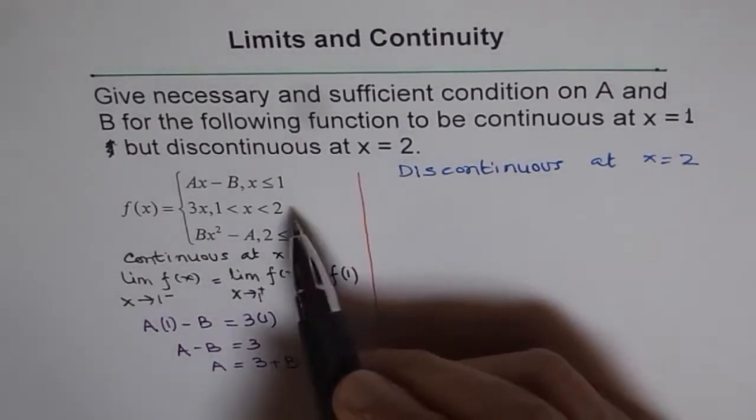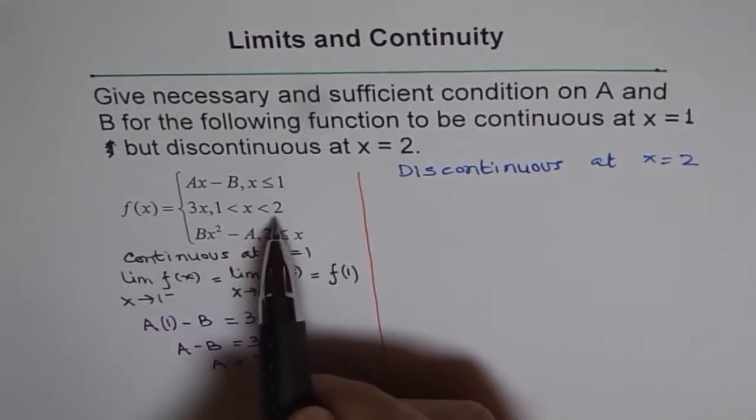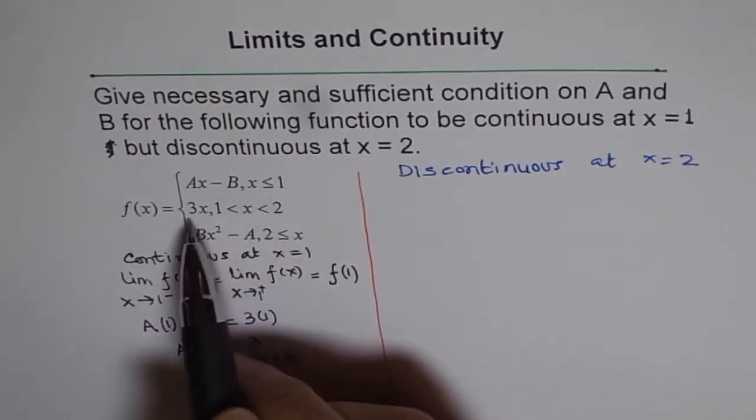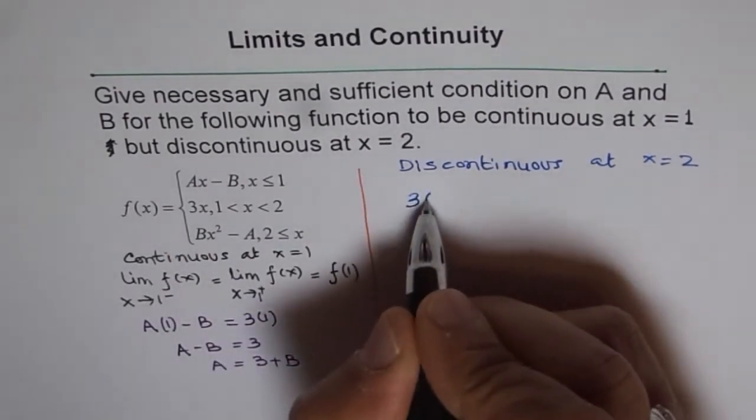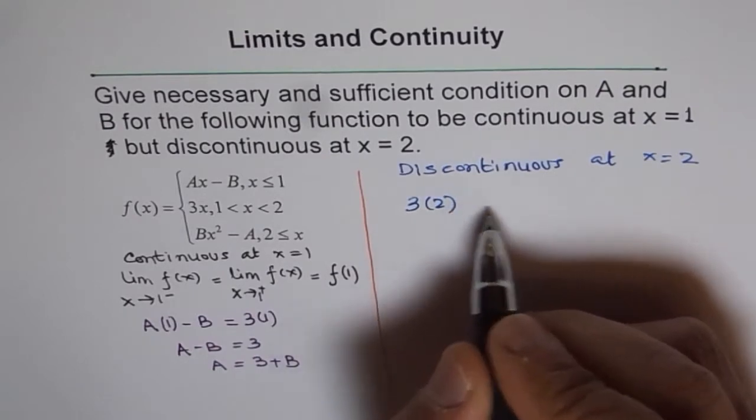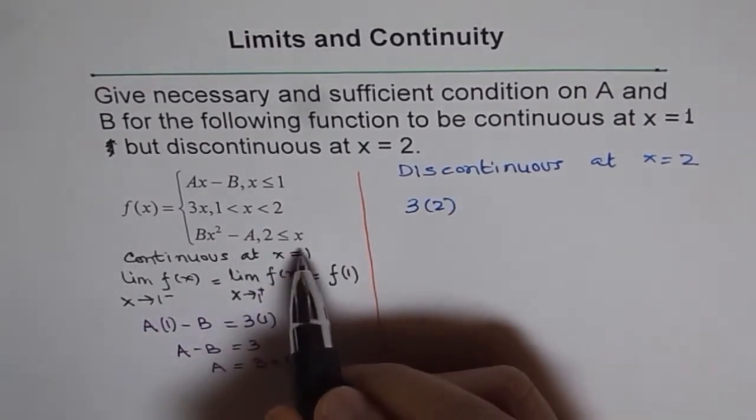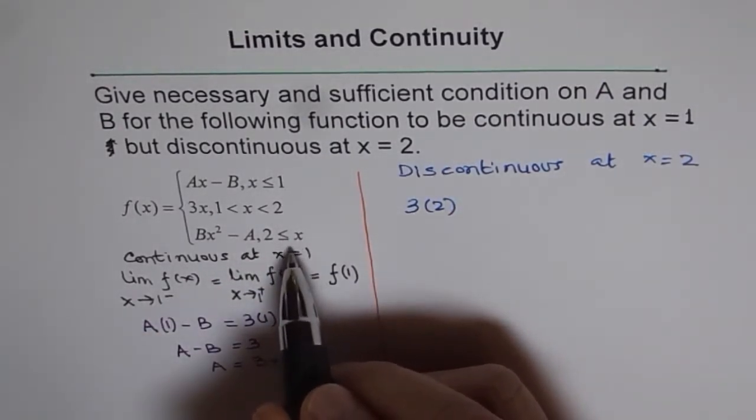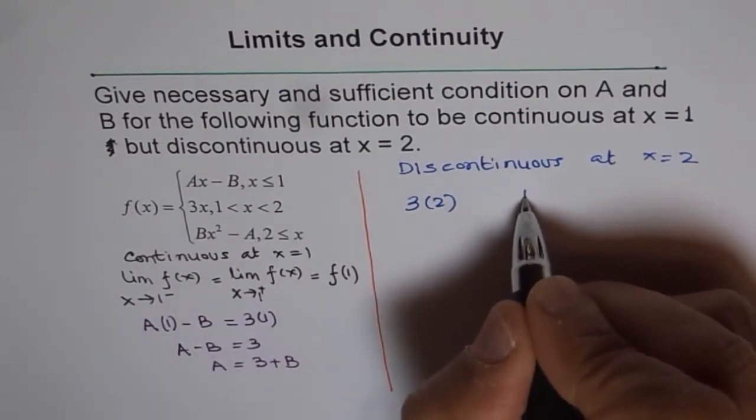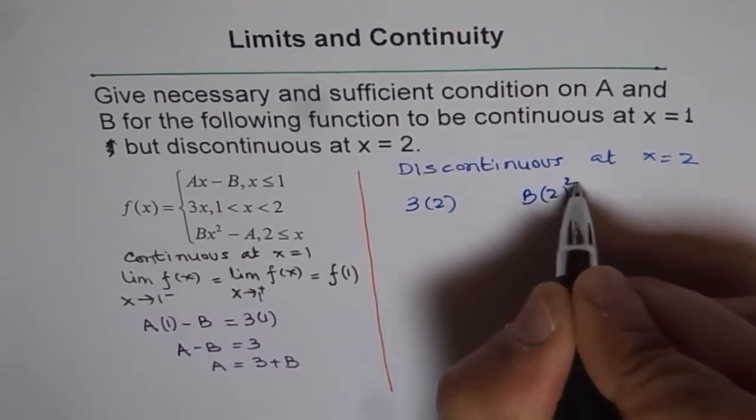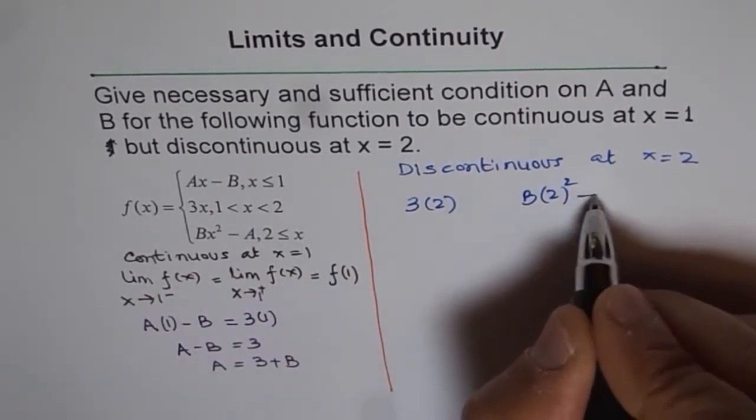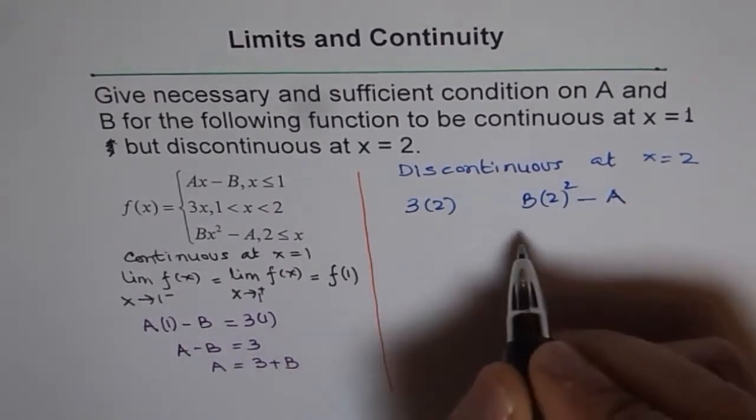Now what happens at x equals to 2? When you are approaching 2 from the left side, then the value of the function is 3x. So that means it is 3 times 2. And when you are approaching it from the right side, then the value should be B times 2 squared, x is 2, minus A.